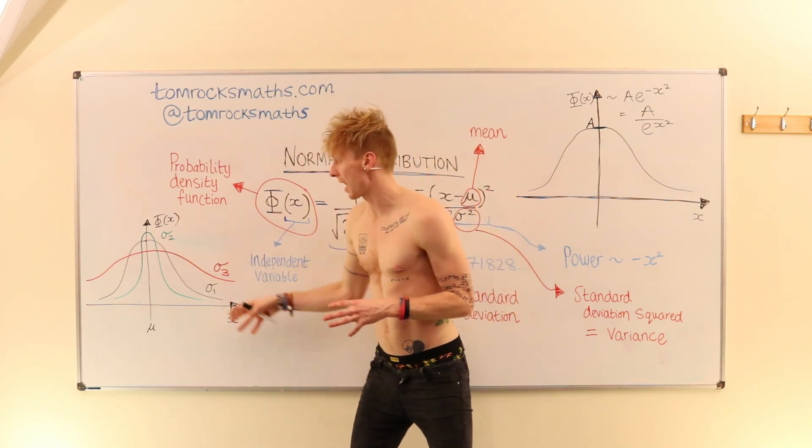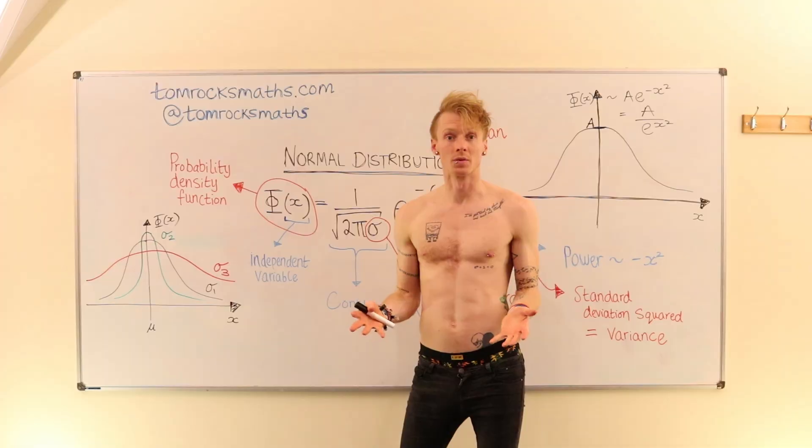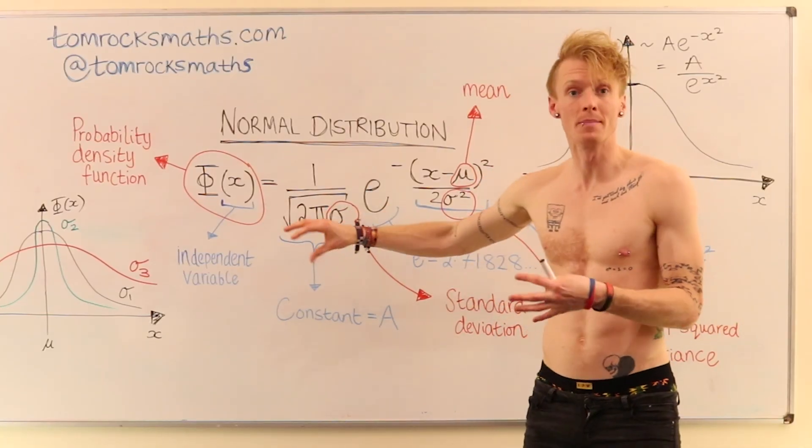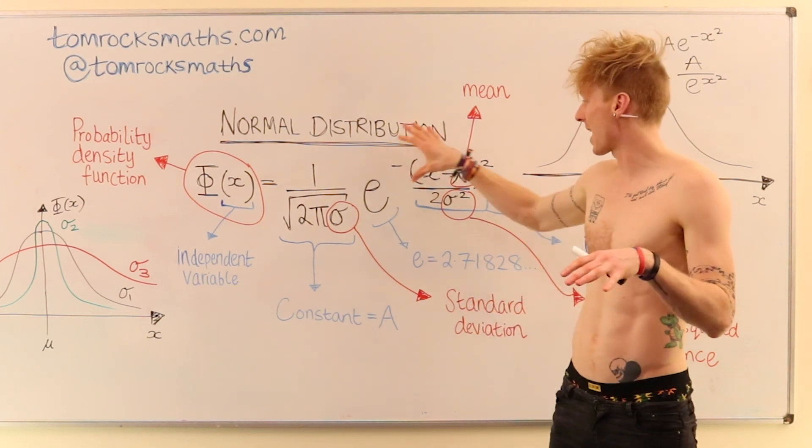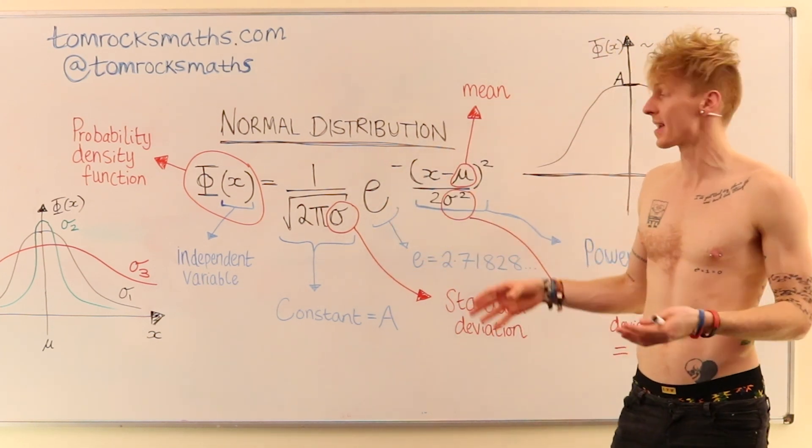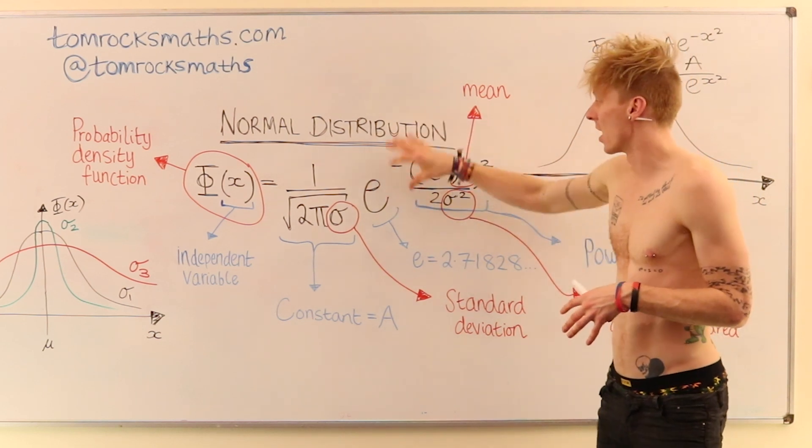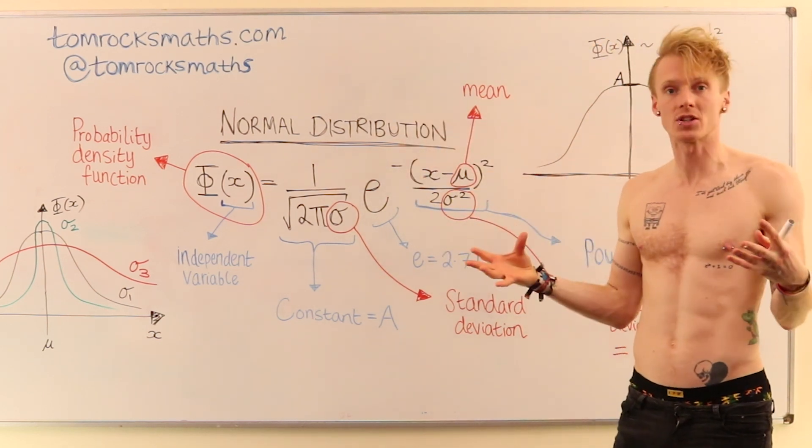And then sigma 1 would lie in between the two. Going back to our equation and moving further over to the exponential term. Remember, we have the number e, which is 2.71828. Then we have this power, the index that e is raised to.